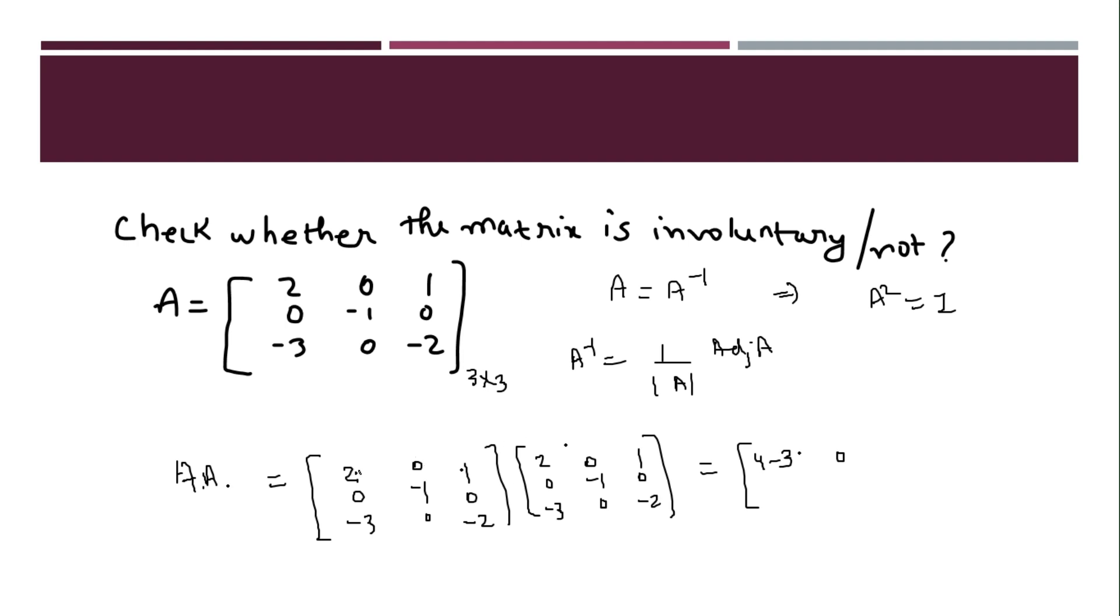First row, second column. This will give you 0 only. 2 times 0 is 0, 0 multiply minus 1 is 0, 1 zeros are 0. Then, first row, third column. 2, 1 is a 2, and this will be 0 and minus 2. Second row, first column is 0, 0, 0. Second row, second column is minus 1. Second row, third column is 0, 0, 0.